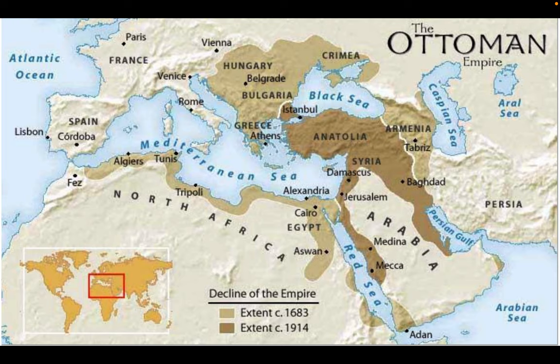From the 1400s and 1500s, the Ottomans took control of modern-day parts of Greece, Bulgaria, Romania, Ukraine, and Albania. At their greatest height in the 1680s they pushed almost as far as Vienna. They were defeated there, which was seen as a big victory for Christian Europe, because many Western Europeans feared that if Vienna fell, Islam would keep spreading and take control.